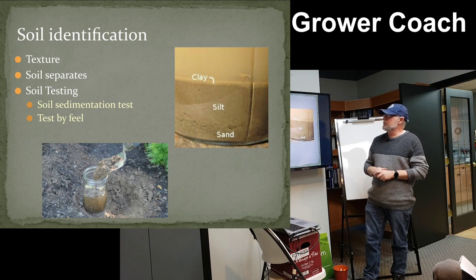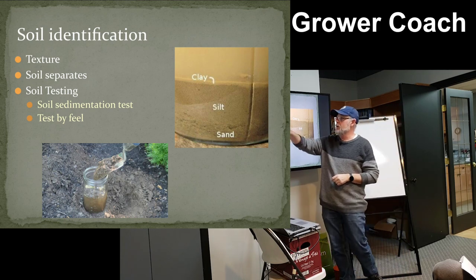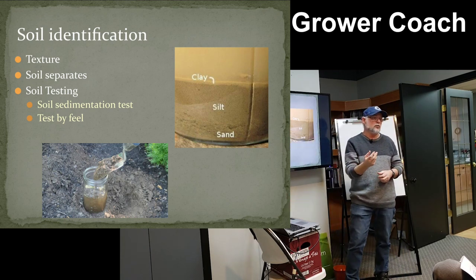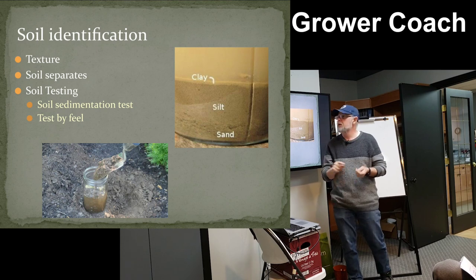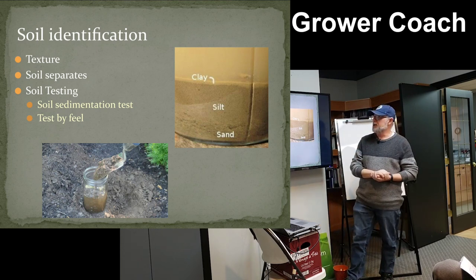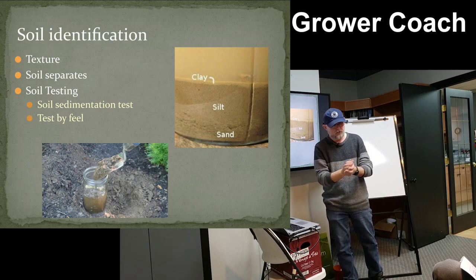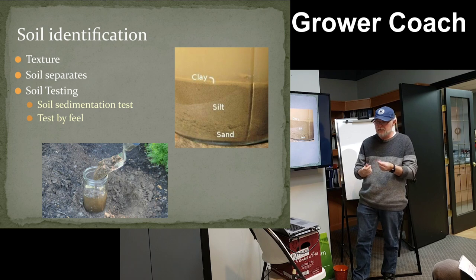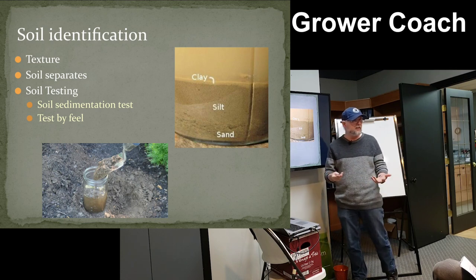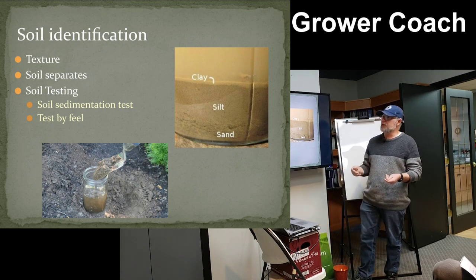Identifying soil is actually quite easy. What we've been discussing is soil texture: fine, medium, and coarse — clay, silt, and sand. You can feel these with your hands. Moisten the soil and rub it between your fingers: if it's really greasy and slippery, it probably has clay in it. If it's somewhere in between — not excessively gritty and not slippery — it's probably silty. And if it's really gritty, you can feel the sand right away.